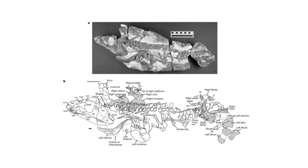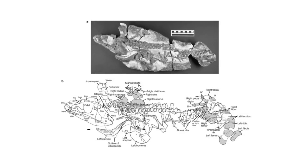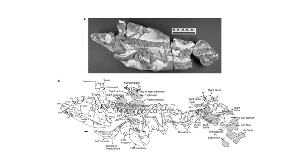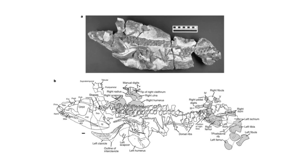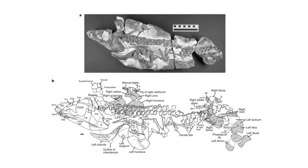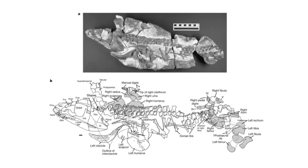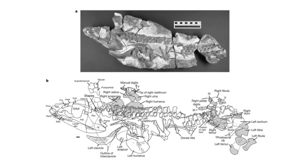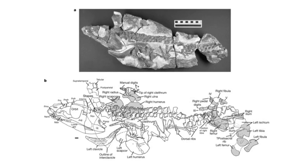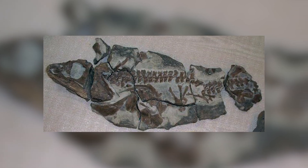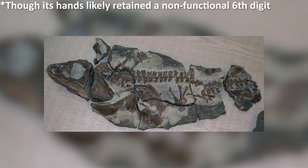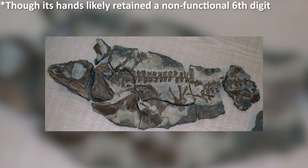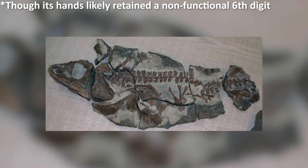This was, at the time, the only fully articulated tetrapod skeleton from the first stage of the Carboniferous — a stage known as the Tournaisian — to be described, and represented the start of a bridge across the gap. Pederpes came from a site in Scotland and was functionally pentadactyl, meaning it had five functional digits on each limb.